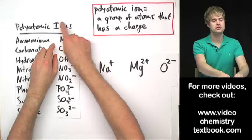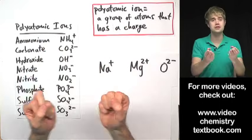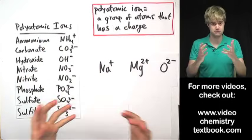Poly means many. So here polyatomic ions, we're talking about ions that are made up of many atoms, more than one atom.